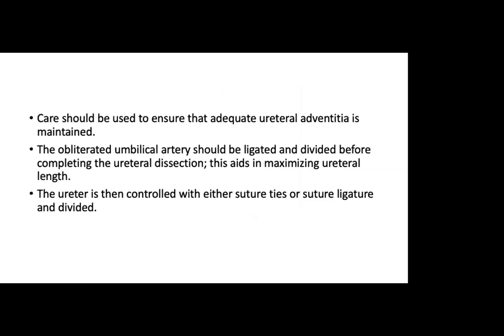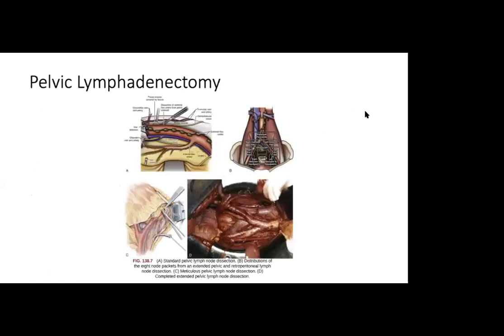The obliterated umbilical ligament is ligated and divided before completing the ureteral dissection — this aids in maximizing ureteral length. The ureter is then controlled with either suture ties or suture ligature and divided. Although controversial, the distal ureteral margin can be sent for frozen section to evaluate for urothelial carcinoma, though studies have shown a correlation between findings of carcinoma at the ureteral margin and subsequent upper tract recurrence.